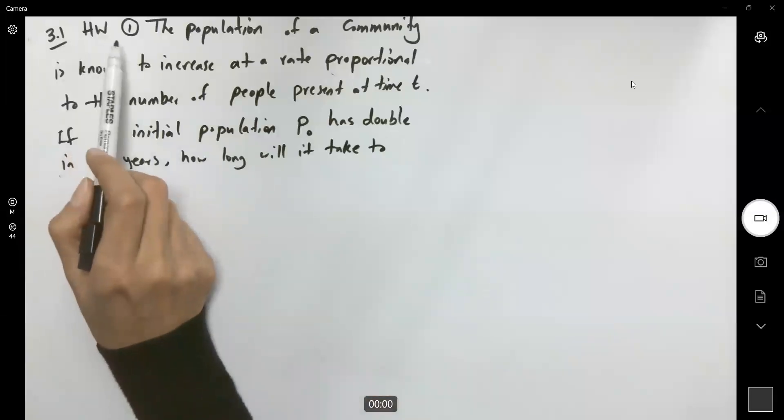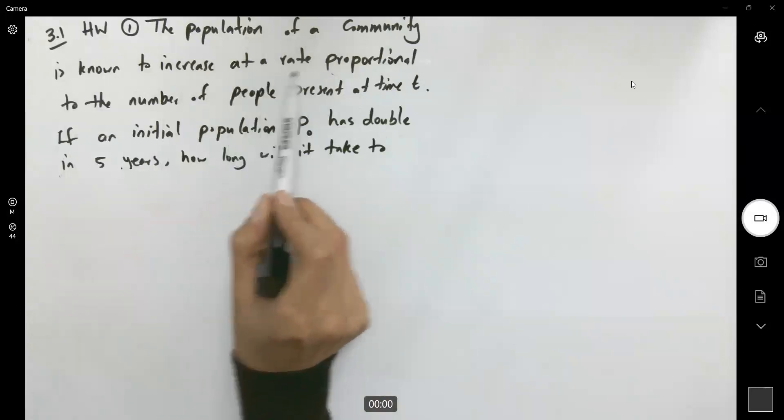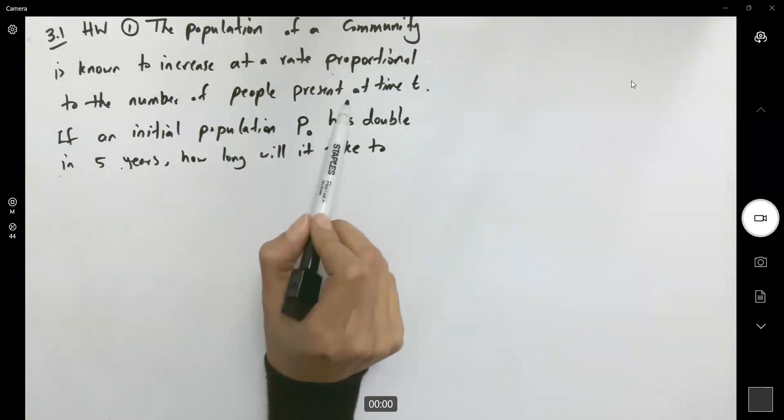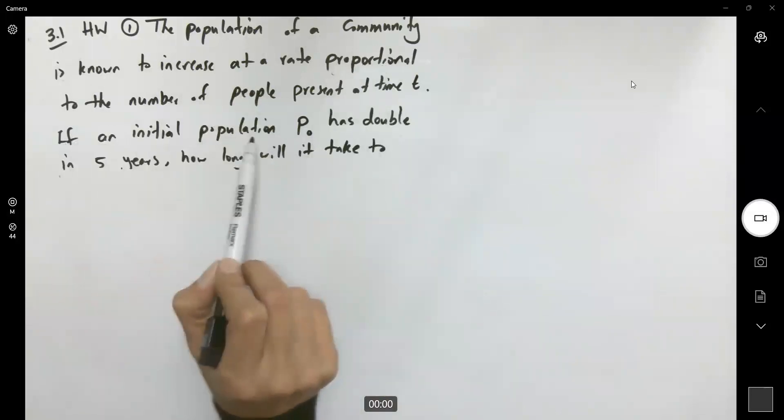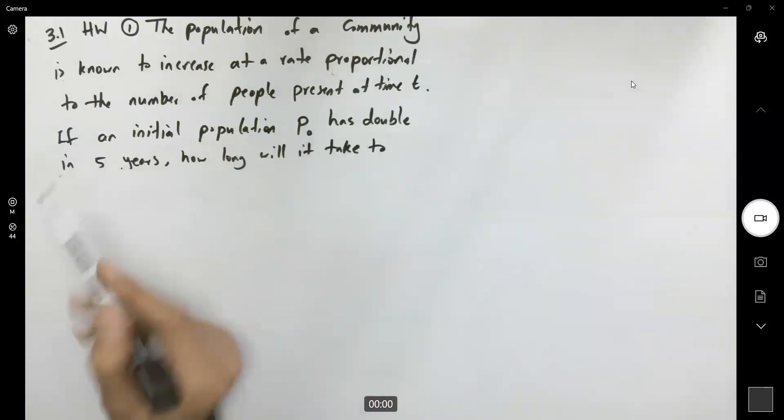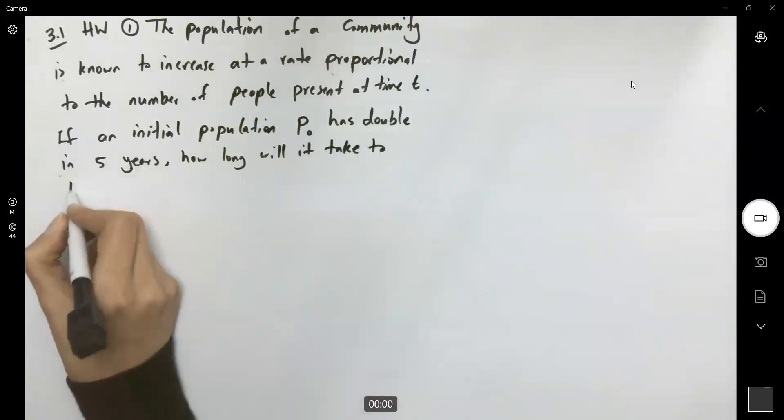Let's take a look at 3.1, homework 1. The population of a community is known to increase at a rate proportional to the number of people present at time t. If an initial population p₀ has doubled in five years, how long will it take to triple?